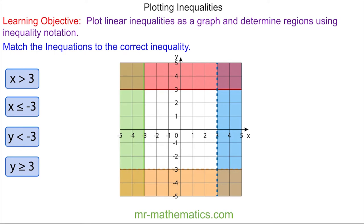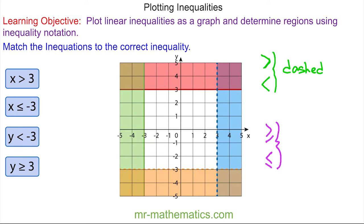When we plot inequalities on a grid we have different symbols. We have the greater than and the less than symbol, and we have the greater than or equal to and the less than or equal to symbol. For the top two, when it can be greater than or less than, we use a dashed line, and when it can be greater than or equal to or less than or equal to, we use a full line.